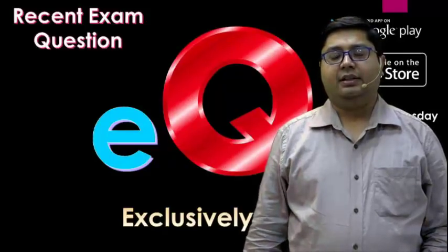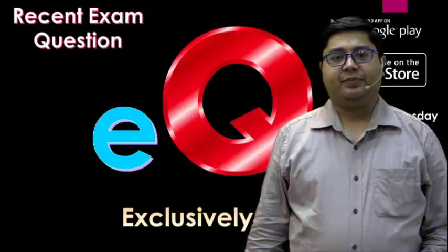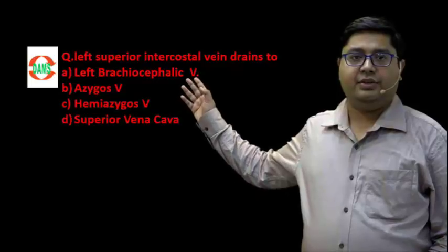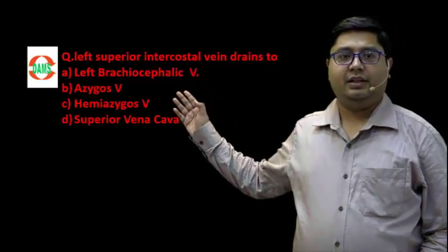Let us see the question. This is left superior intercostal vein drain. These were the choices: left brachiocephalic, azygos, hemiazygos, or superior vena cava.